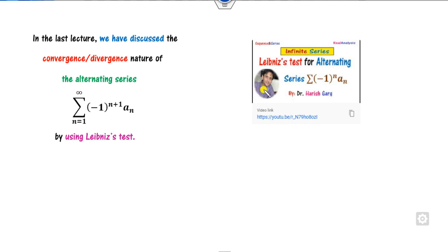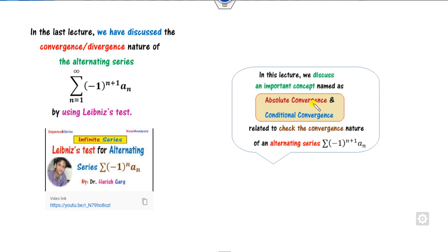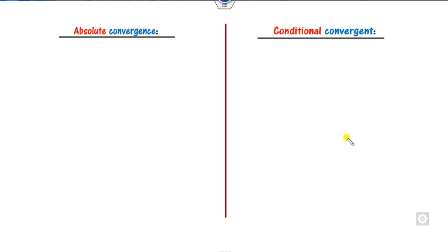In the last lecture, we discussed the Leibniz test related to the convergence and divergence of the alternating series. In this lecture, we will discuss about when this alternating series is said to be absolutely convergent or conditionally convergent. I will give you the formal definition and then we will explain with the help of 17 numerical examples.